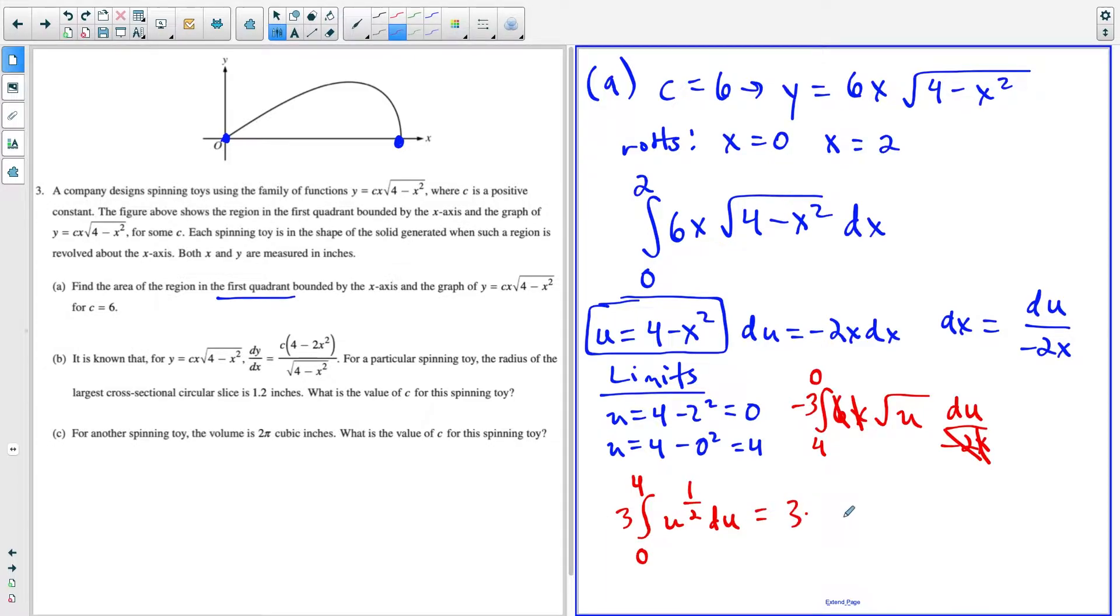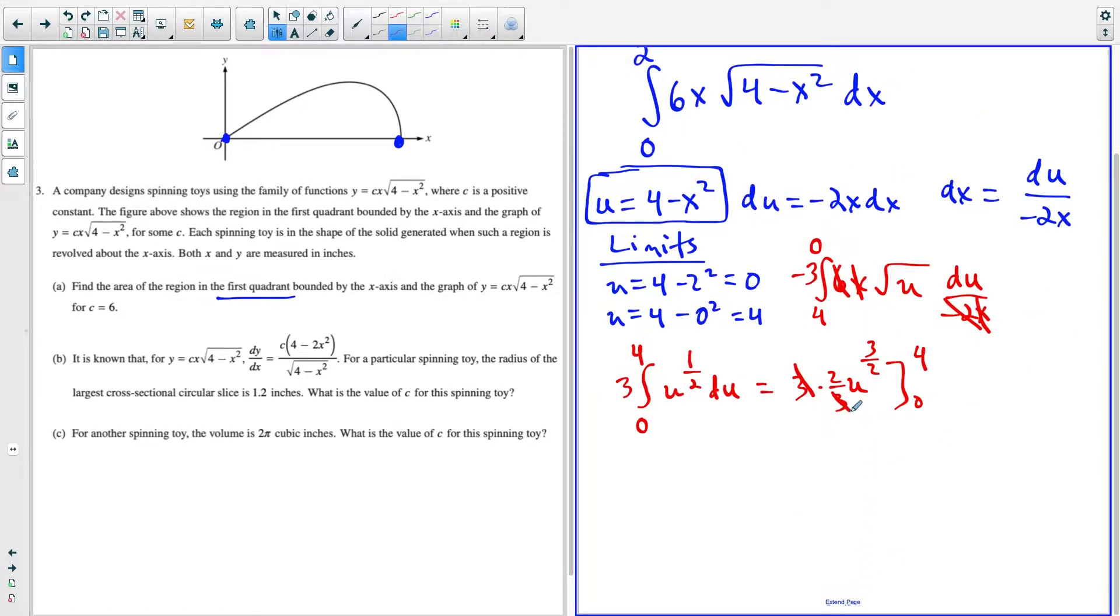And now this is three times u to the one half plus one is three halves. And then the reciprocal of three halves is two thirds. And now our limits are zero and four.